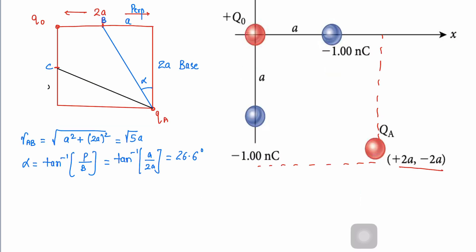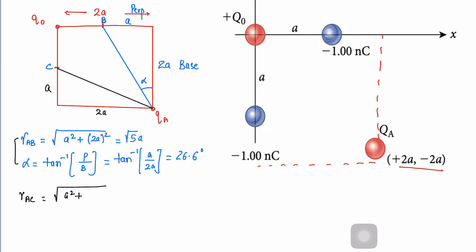Now the major point — this distance is a and the other is 2a. Both things are the same. We find r_ac similarly: the square root of a² + (2a)² gives the same answer, root 5·a. Even the angle alpha is the same, tan⁻¹, which gives 26.6 degrees. We now have two forces: F_ab and F_ac.